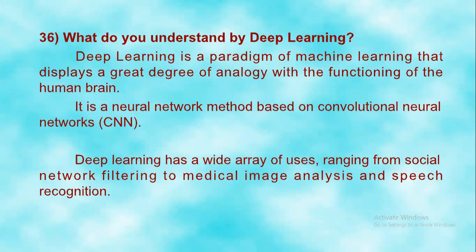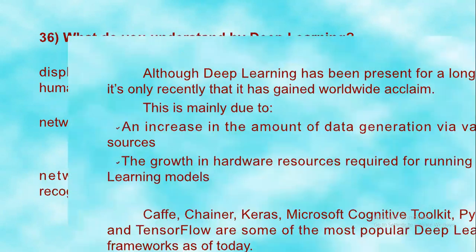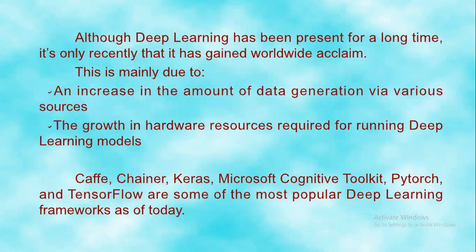Deep learning is a paradigm of machine learning that displays a great degree of analogy with the functioning of the human brain. It is a neural network method based on convolution neural networks, that is CNN. Deep learning has a wide array of uses ranging from social network filtering to medical image analysis and speech recognition.